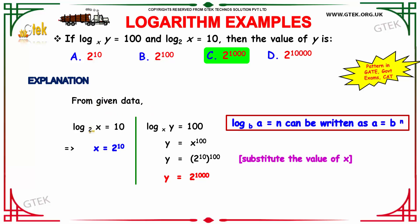From the given data, log x to the base 2 equals 10, so by the logarithmic form, 2 raised to the power 10 gives x — hence x equals 2 to the power 10. And log y to the base x equals 100 means x raised to the power 100 equals y, so y equals x to the power 100. Substituting x equals 2 to the power 10, you get y equals 2 to the power 1000, which is option C.